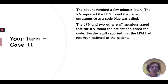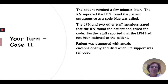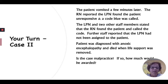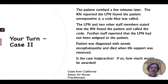The LPN and two other staff members stated that the RN found the patient and called the code, and further stated that the LPN had not been assigned to the patient. The patient was diagnosed with anoxic encephalopathy and died when life support was removed. Is this malpractice, and if so, how much would be awarded? Obviously there was a communication problem, and there were also two different stories when the case got to court, which doesn't help anybody's cause. The RN was found guilty of malpractice and the family was awarded $250,000. This case came from the California Association for Nurse Practitioners.